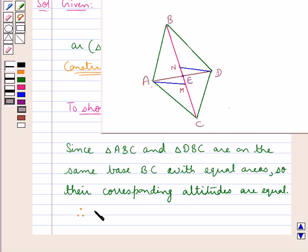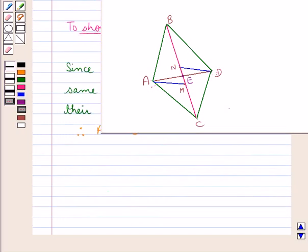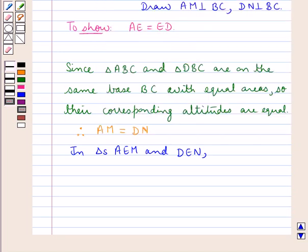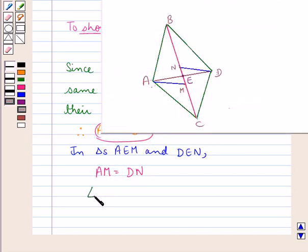Therefore, AM would be equal to DN. Now, consider the triangles AEM and DEN. In this, we already have AM is equal to DN. Then, angle AME is equal to angle DNE and each is equal to 90 degrees since they are the altitudes.